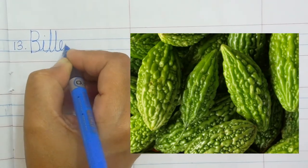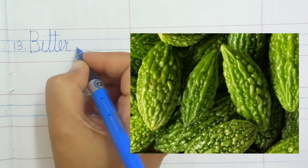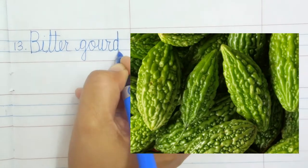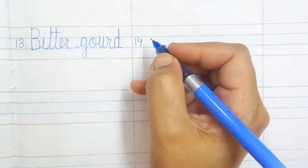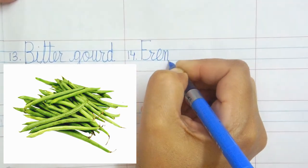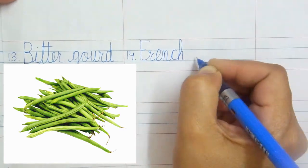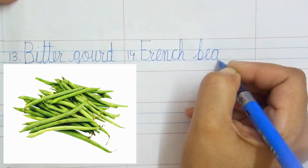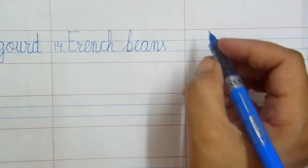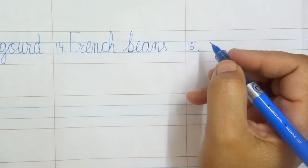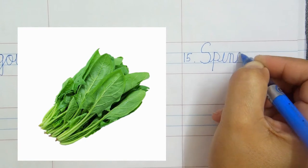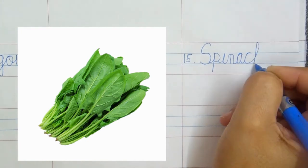Bitter gourd: B-I-double T-E-R G-O-U-R-D, bitter gourd. French beans: F-R-E-N-C-H B-E-A-N-S, french beans. Spinach: S-P-I-N-A-C-H, spinach.